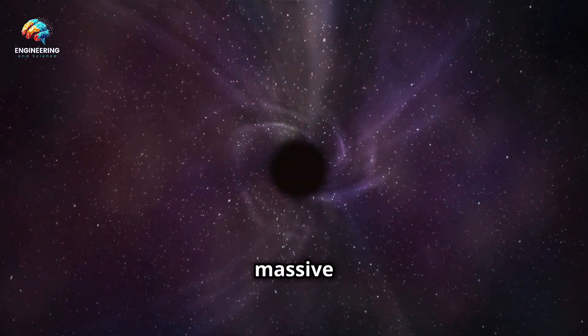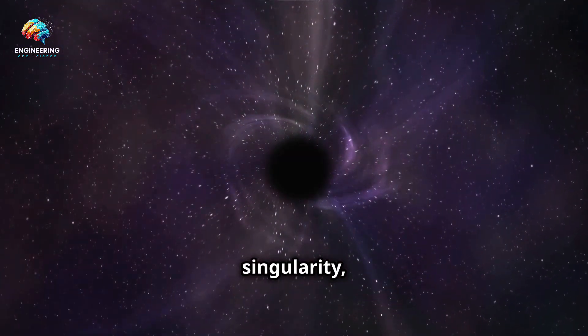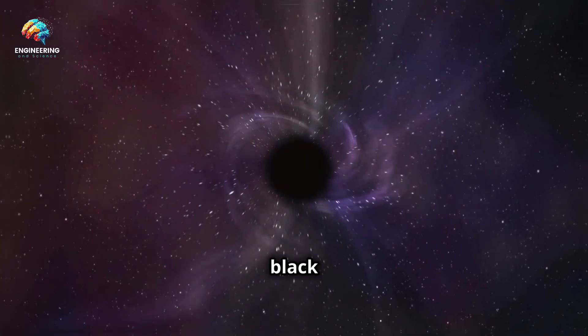If the core of the star is massive enough, the collapse continues until it forms a singularity, an infinitely dense point at the centre of a black hole.